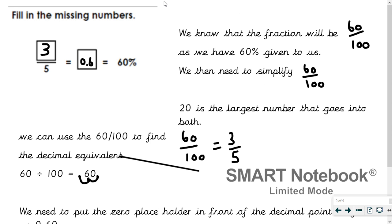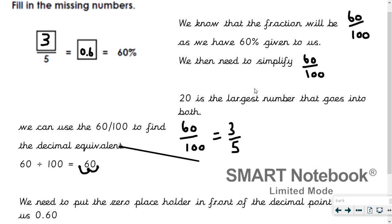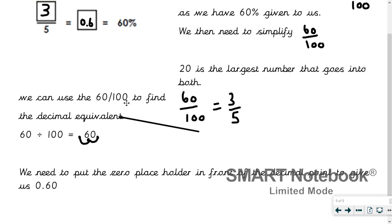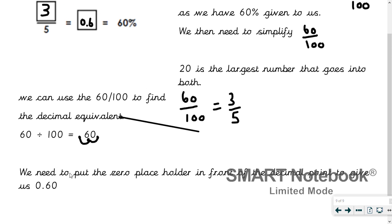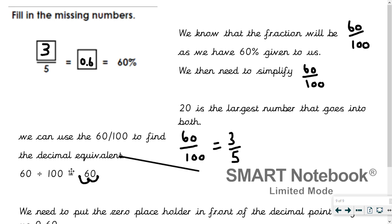Let's go through the answers. The fraction is 60 over 100 — that's what 60 percent means. We simplify: the largest number going into both 60 and 100 is 20. Twenty goes into 60 three times, and into 100 five times — so the fraction in fifths is three fifths. To find the decimal, we use 60 over 100 and do two jumps to the right; place a zero in front as a placeholder, giving 0.60 or 0.6. That's it for today — close the video and then do your 10 or 15 minutes of TT Rockstars. Well done, and I'll see you tomorrow.